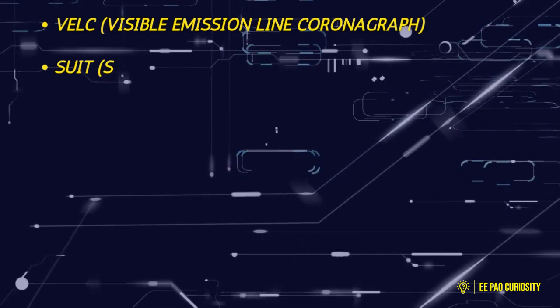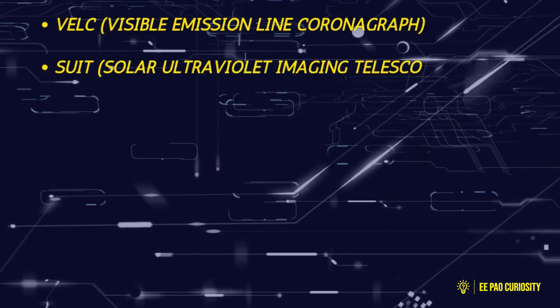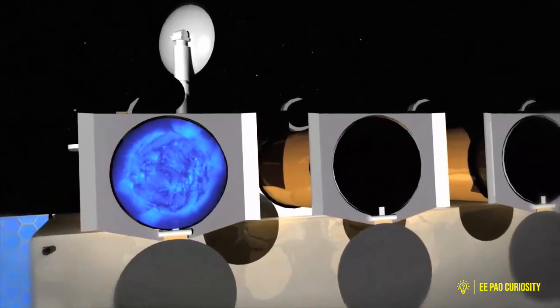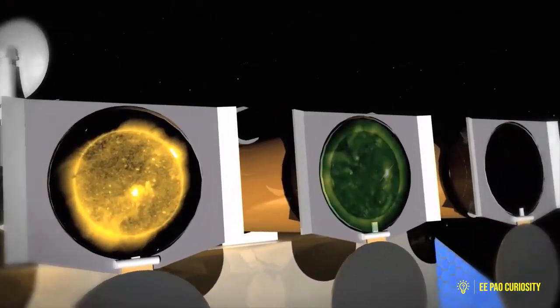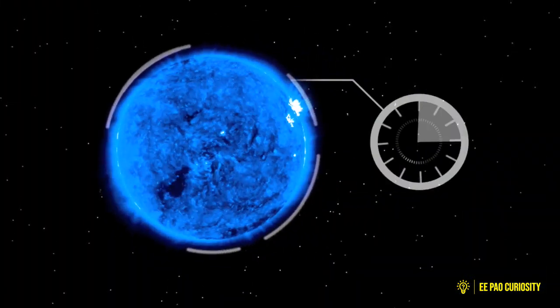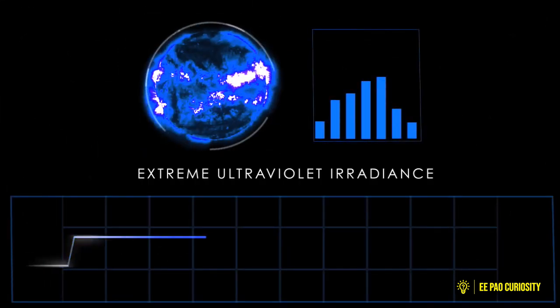Number 2: The SUIT Solar Ultraviolet Imaging Telescope. It is developed by the Inter-University Center for Astronomy and Astrophysics, Pune. Its objective is to image the spatially resolved solar photosphere and chromosphere in near-ultraviolet spectrum at around 200 to 400 nanometer wavelength and measure solar irradiance variations.